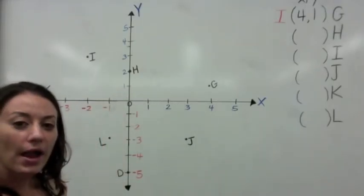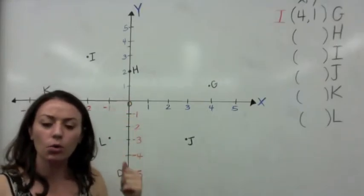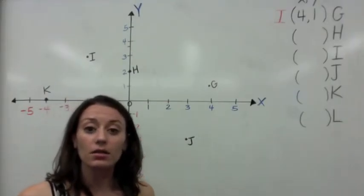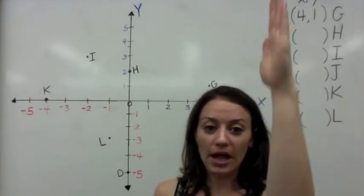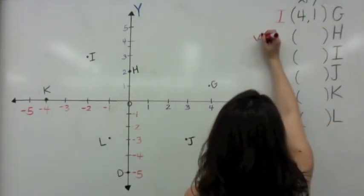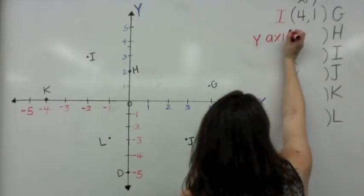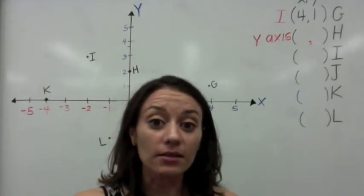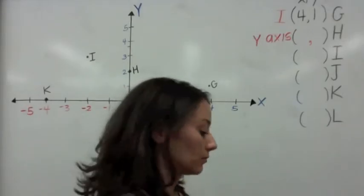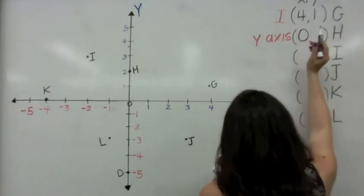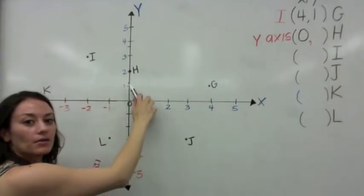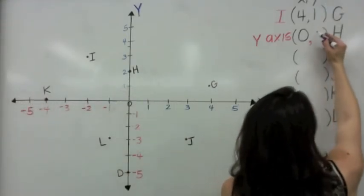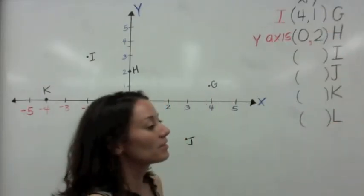Let's go to H. Where is H located? What quadrant? It's not in a quadrant — it's on the y-axis. So the first thing we write is: it's on the y-axis, not in a quadrant. On the y-axis, x has to be 0. If we start at 0 and go up 2, that is labeled as (0, 2). X is 0 and y is 2.